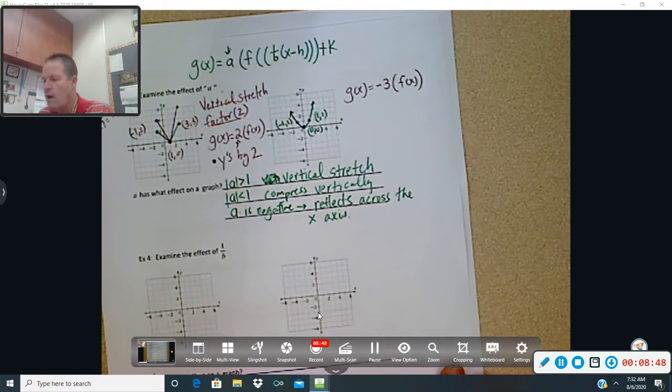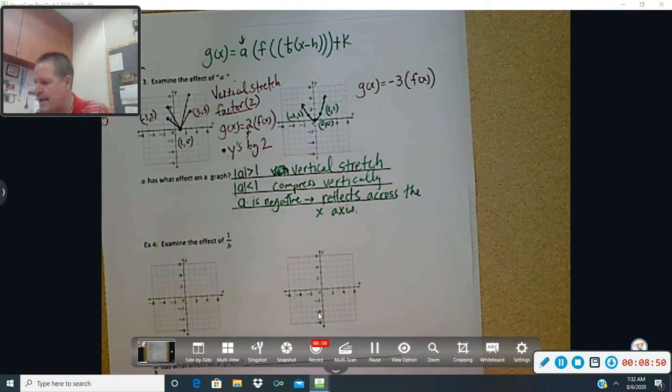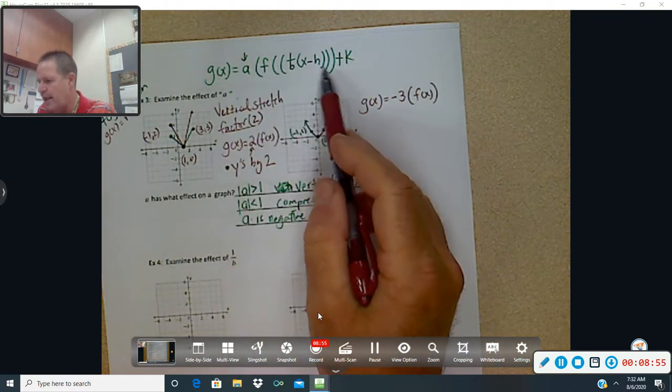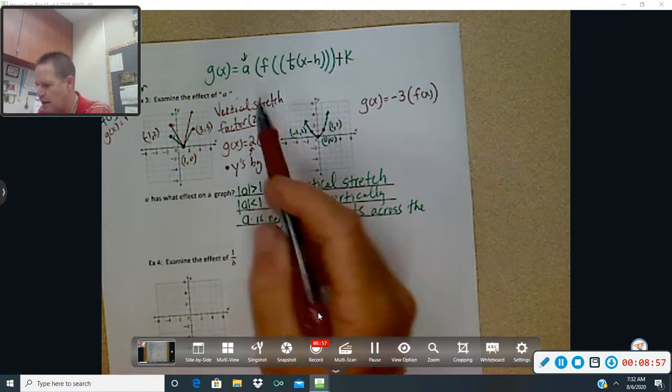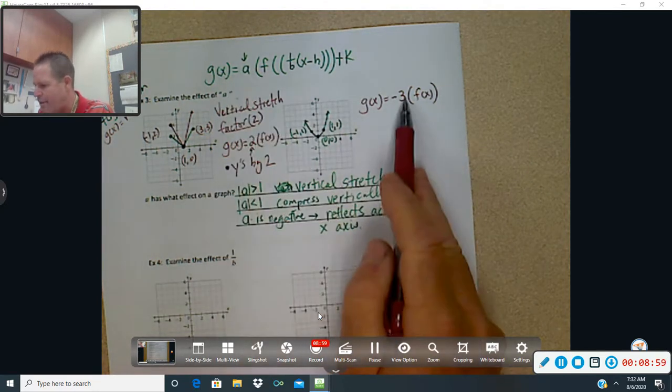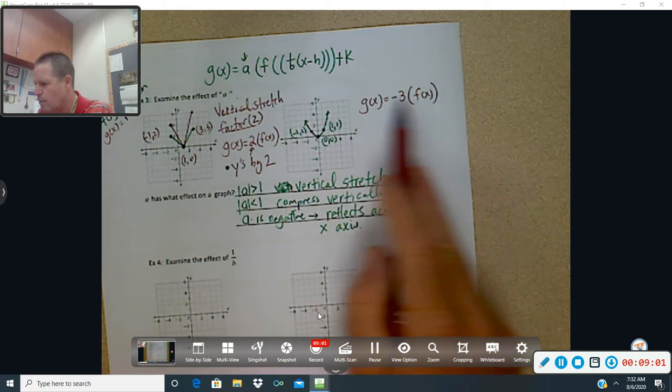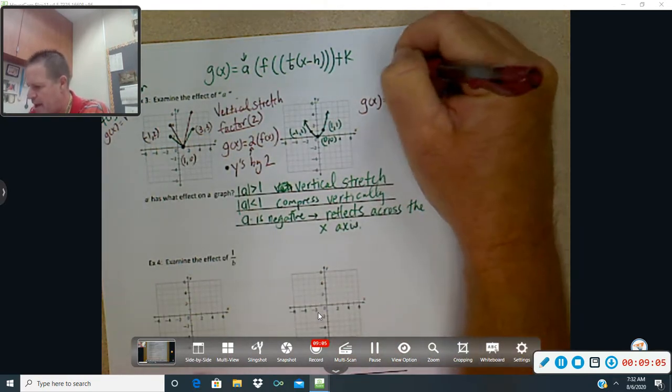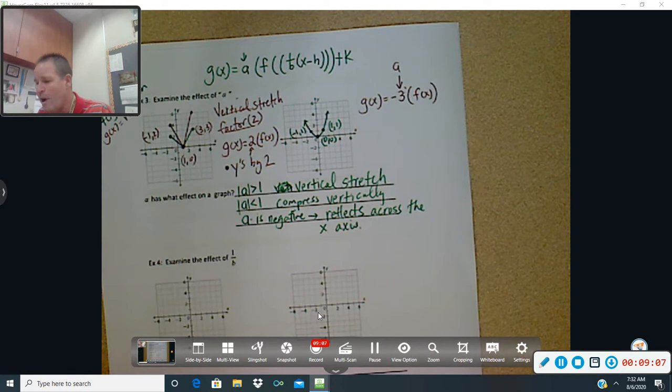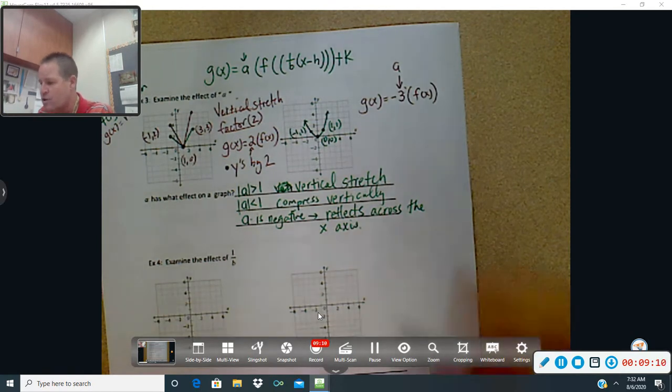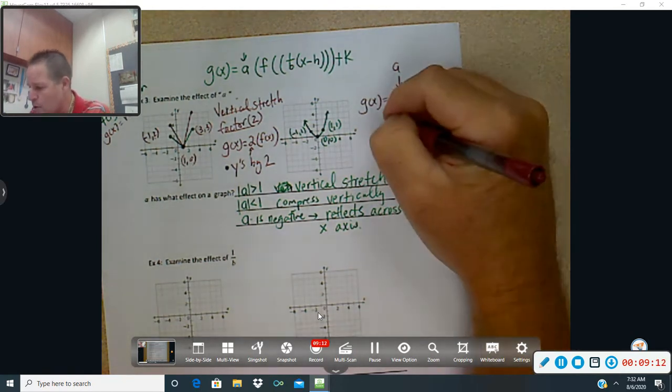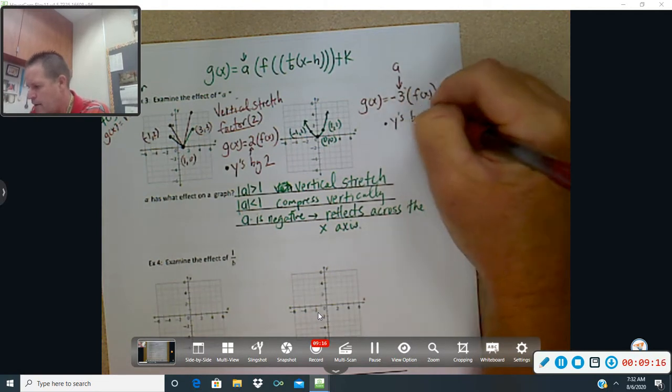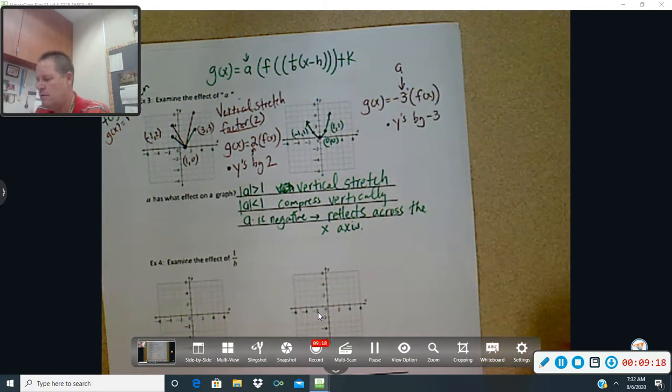So now, what we want to look at is, what is the negative 3's position? Is it an a? Is it a b? Is it an h? Or is it a k? Now, looking at it, a is the thing that's out in front. It's multiplied by the function. So here's your a value right there. That is a. Now, again, what does a do? Again, because we're vertically stretching, a is going to multiply the y's by negative 3. OK. To get that.